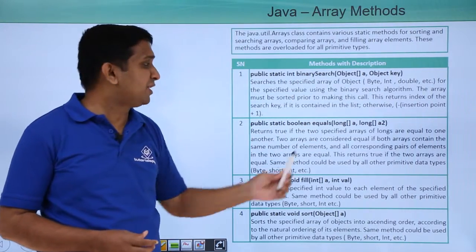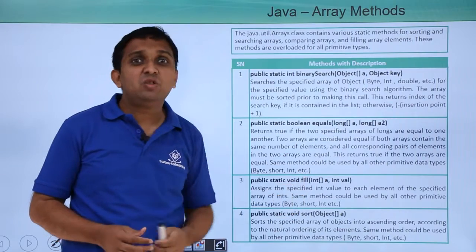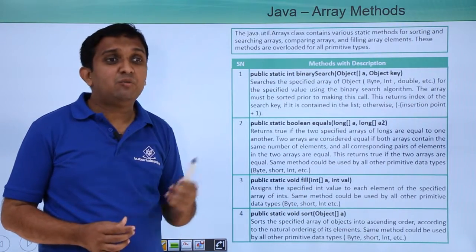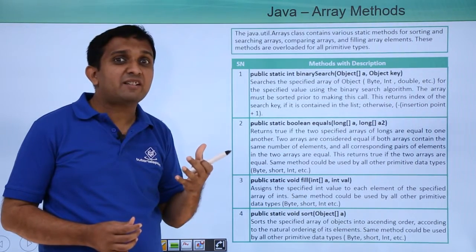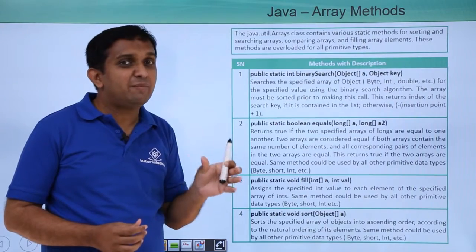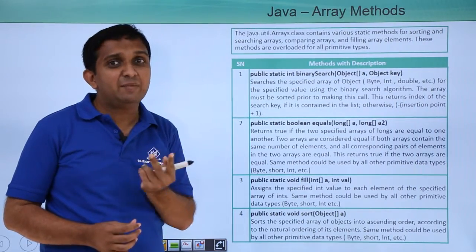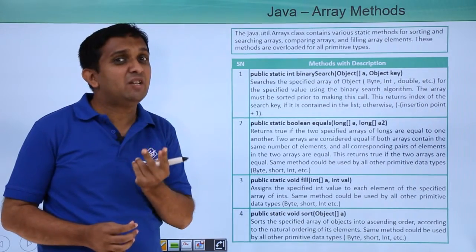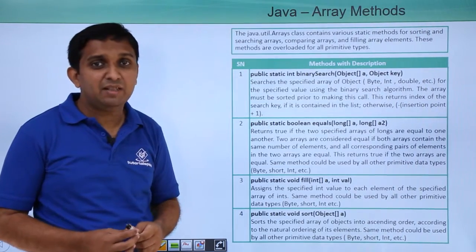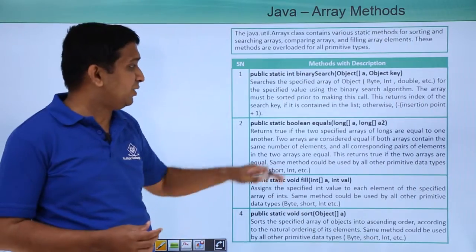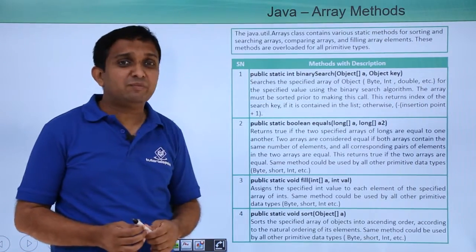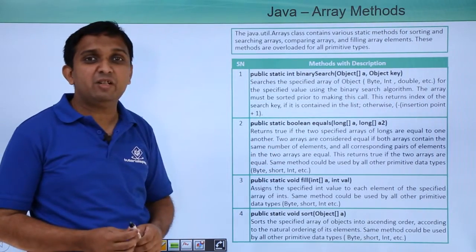Another method is equals. The equals method is used to compare two arrays. Two arrays are considered equal if the number of elements in both arrays are the same and each pair of values is the same. Then we say that two arrays are equal. The equals method will return either true or false depending on the result.